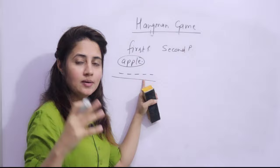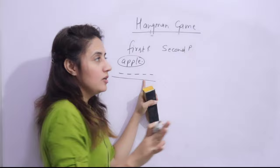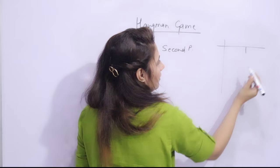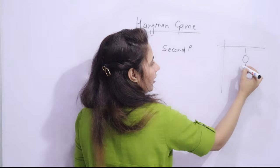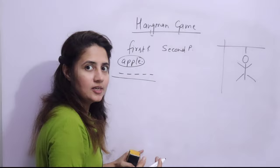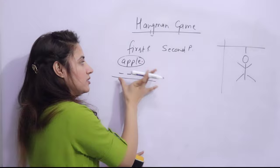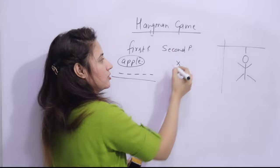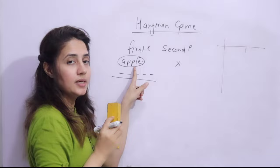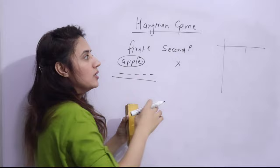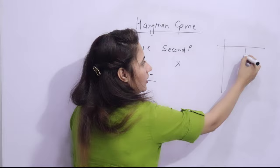The second player has to guess the word by suggesting letters, but within a limited number of guesses. There are not unlimited attempts - there are limited attempts. The hangman figure has a head, body, two hands, and legs. We consider that we have six lives - within six attempts you have to guess the correct word. Suppose the second player guesses 'x' - that letter is not present, so you lose a life. The first player starts drawing the hangman figure, starting with the head.